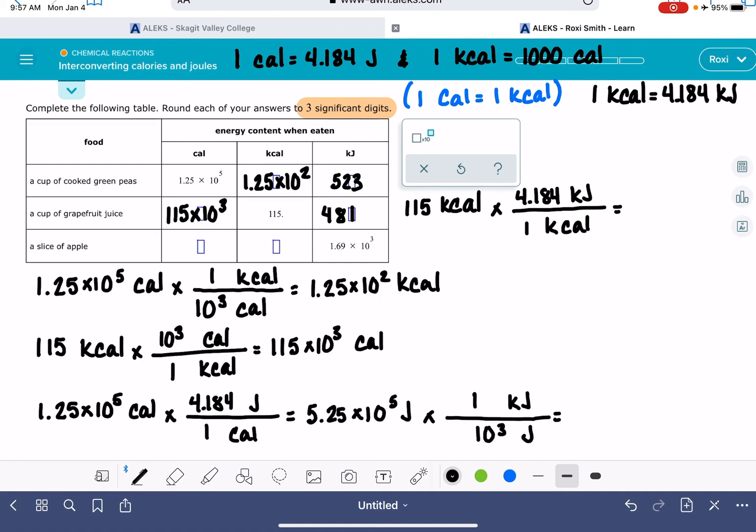So the last thing that is needed is our slice of apple where we're working backwards in this problem, starting with kilojoules converting into kcals, 1.69 times 10 to the third kilojoules going back into kcals. I think it would be easier to do kcals first because we can use this same conversion right here. One kilocalorie is 4.184 kilojoules. 1.69 times 10 to the third divided by 4.184. This gives me 404 kcals.